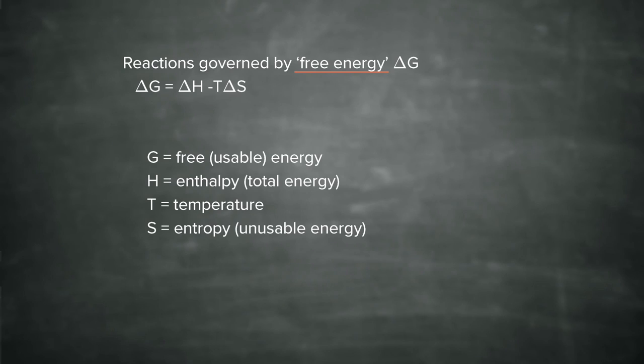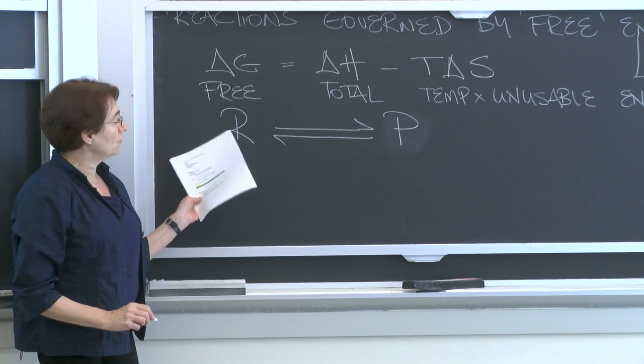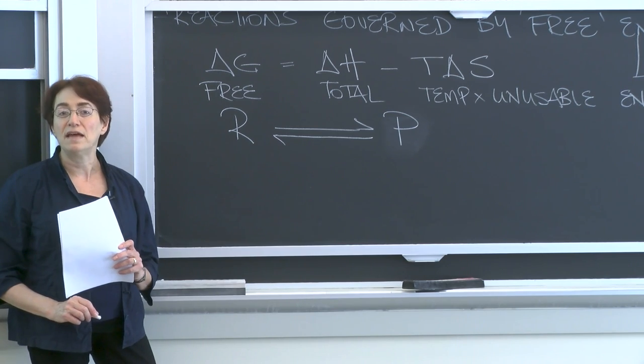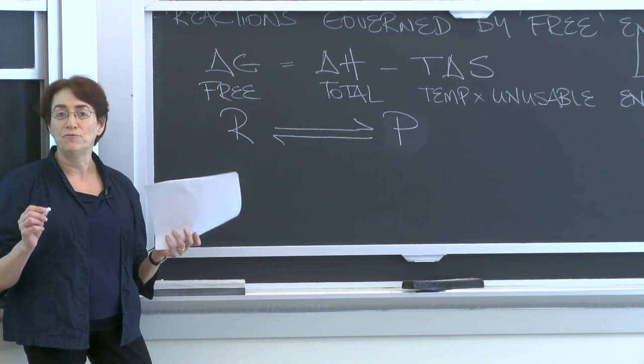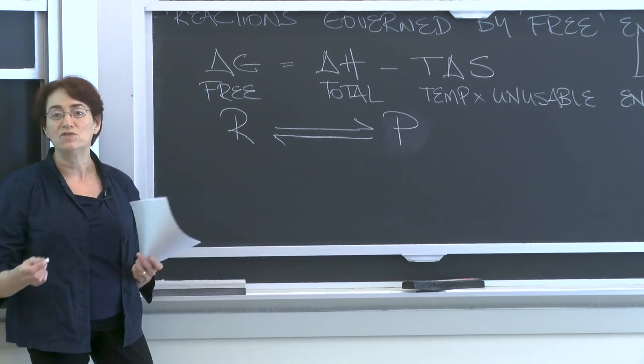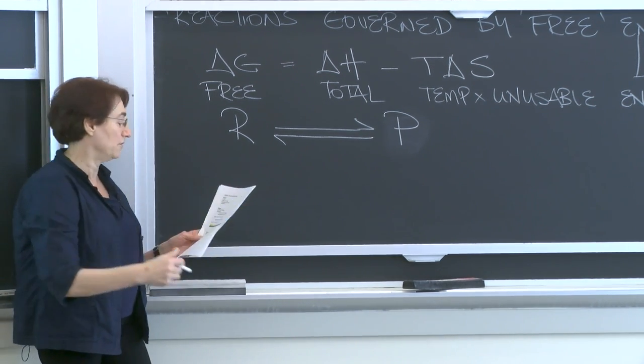When we think about a chemical reaction such that some reactants can either become products, reactants becoming products, or products can become what were reactants. So chemical reactions can go in both directions. There are three things that can happen to free energy during this reaction, either one way or the other.